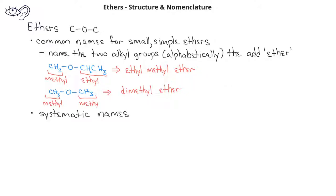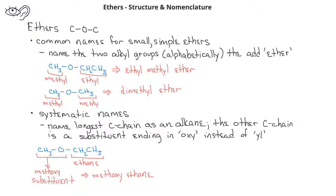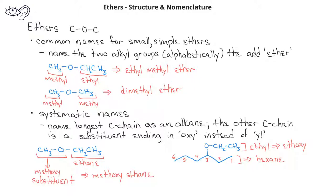The systematic names for ethers involves identifying the longest carbon chain as if it were an alkane, and then adding the other substituent with an oxy instead of yl. In this case, instead of naming this ether ethyl methyl ether with the common system, the systematic name would be methoxyethane. In the second example, we have an ethyl group on one side of the oxygen and a six-carbon chain on the other side. We would name the six-carbon chain as a hexane, and then the oxygen with the ethyl group would be an ethoxy attached to the third carbon, so the systematic name for this ether would be 3-ethoxyhexane.